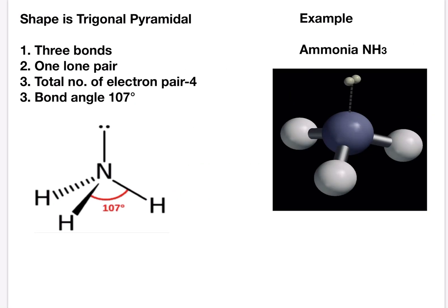Let's move on to the next example. Ammonia NH3. Ammonia has a trigonal pyramidal shape and we see there are three bonds. One lone pair is there. So the total number of electron pairs with the three bonds and one lone pair is four. Because of the lone pair the angle moves down to 107.